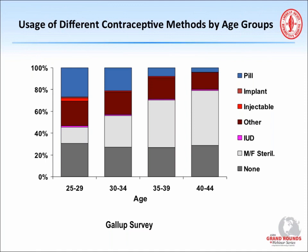Probably the primary thing that you want to know about contraceptives in general is that as you go through the life cycle, most women and couples will change their methods of contraception, with birth control pills being probably the predominantly used method, and then that slowly and steadily decreases as sterilization starts to become an increasing part of the armamentarium as women get into their late 30s and 40s.